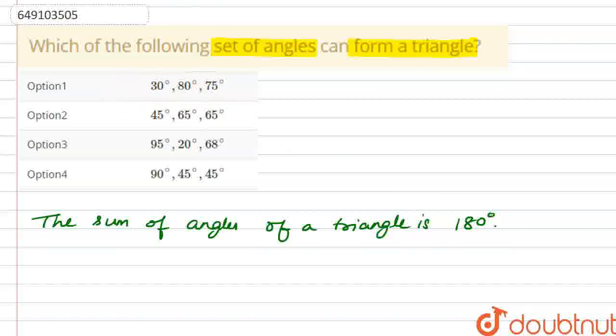If we check option one, we have three angles here. We have to check these three angles. Here is 30 plus 80 plus 75. 30 plus 80 is 110, and 110 plus 75 is 185, which is not equal to 180. So this cannot form a triangle.